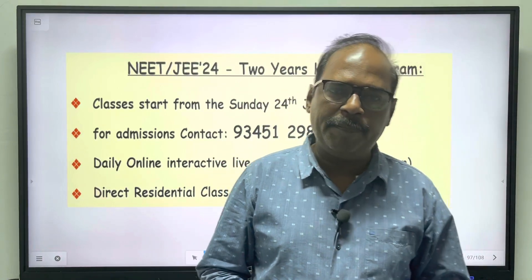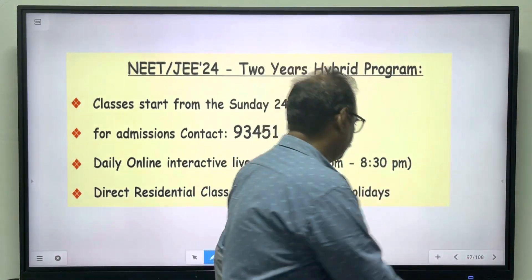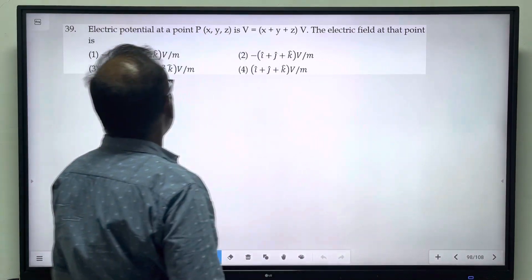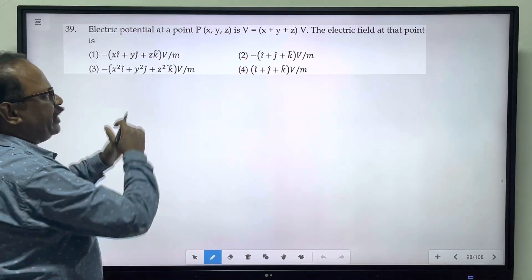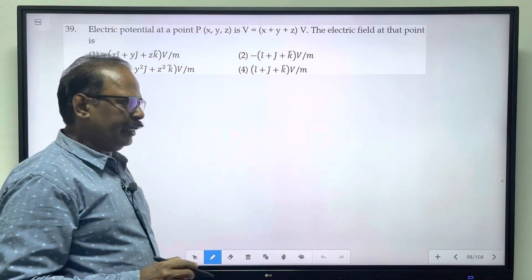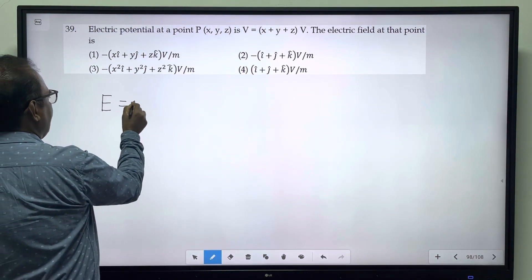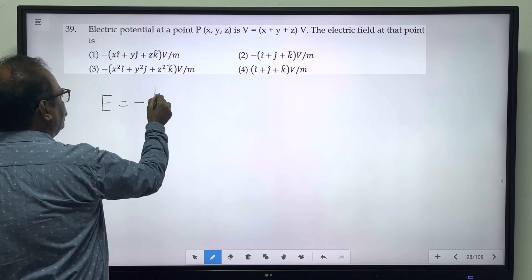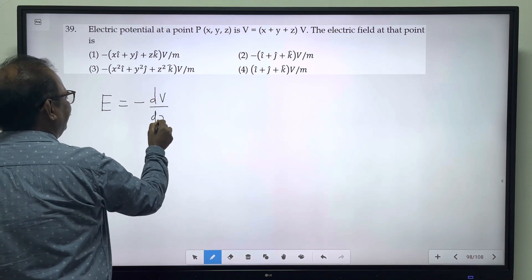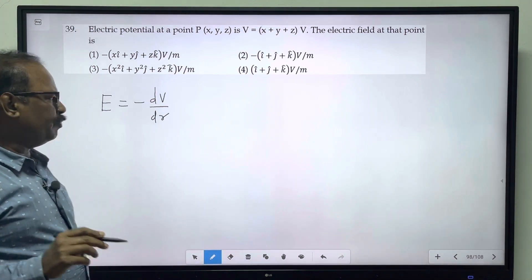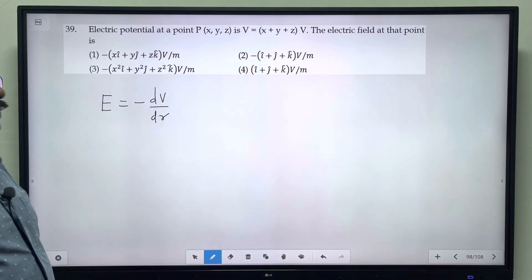Students, welcome. Now we'll look at the relation between electric field and electric potential. Electric field is defined as the negative potential gradient.